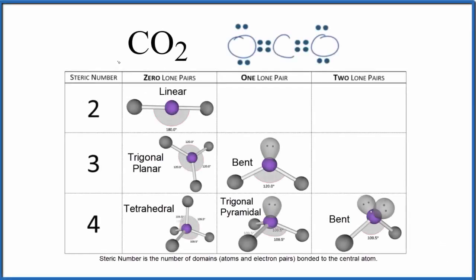The steric number for a molecule like CO2 is useful to figure out the molecular geometry or the shape of the molecule.